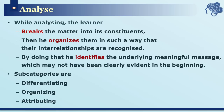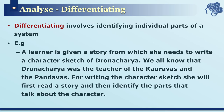The next cognitive process dimension is analyze. Analyzing occurs when the learner breaks matter into its constituents, organizes those constituents so their interrelationships are recognized, and identifies the underlying message they convey — messages that may not be overtly evident or noticeable in the original material. The subcategories of analyze are differentiating, organizing, and attributing.